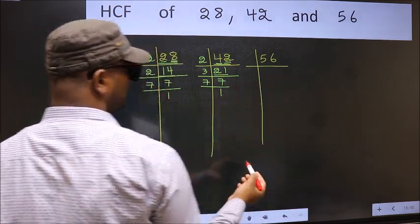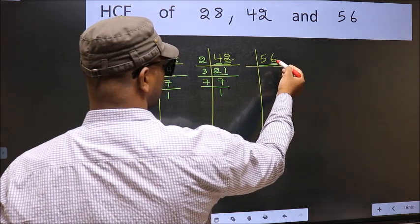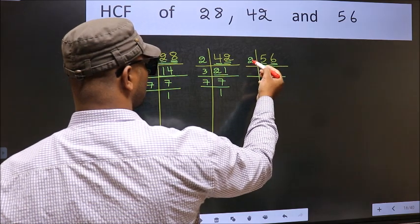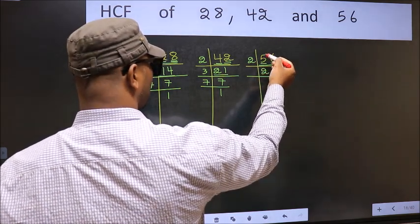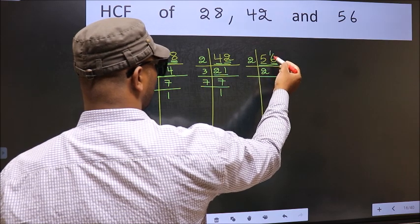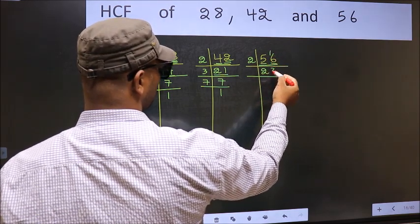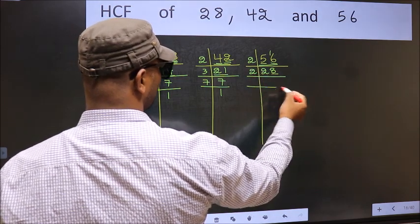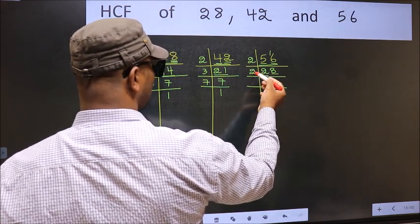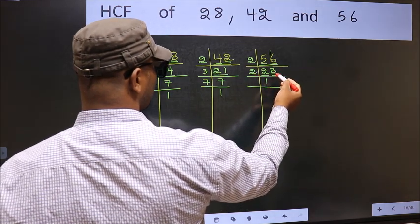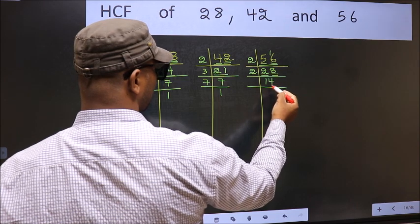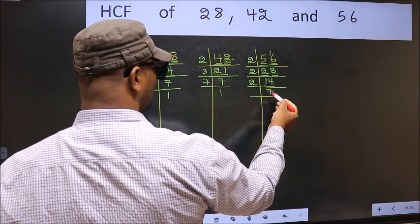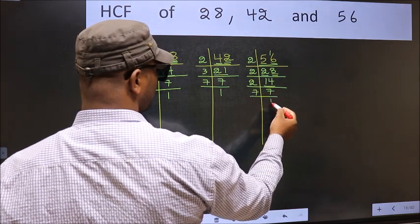Now, the other number 56. Last digit 6, even, so take 2. First number 5, a number close to 5 in the 2 table is 2 times 2 is 4. 5 minus 1 is 4, 1 carried forward 16. When do we get 16 in the 2 table? 2 times 8 is 16. Now, last digit 8, even, so take 2. First number 2, when do we get 2 in the 2 table? 2 times 1 is 2. The other number 8, when do we get 8 in the 2 table? 2 times 4 is 8. Now, 14 is 2 times 7 is 14. Now, 7 is a prime number, so 7 times 1 is 7.